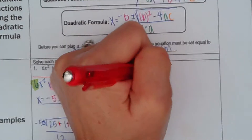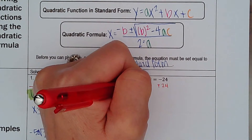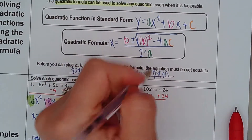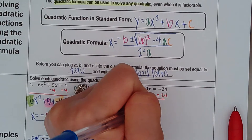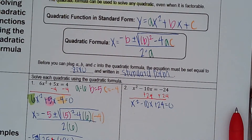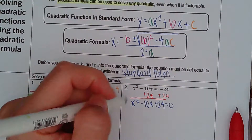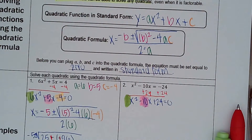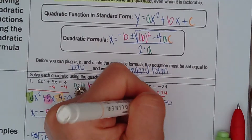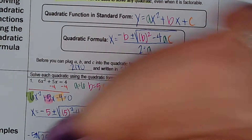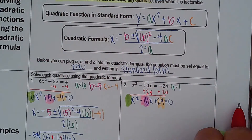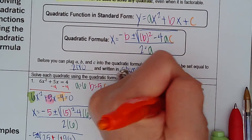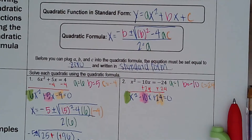First things first, get it into standard form — plus 24 on both sides — and I end up with x² minus 10x plus 24 equals 0. This is my A, this is my B, and this is my C. A equals 1, B equals negative 10, and C equals 24.